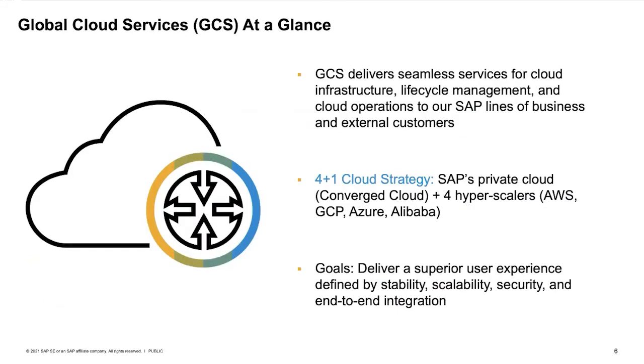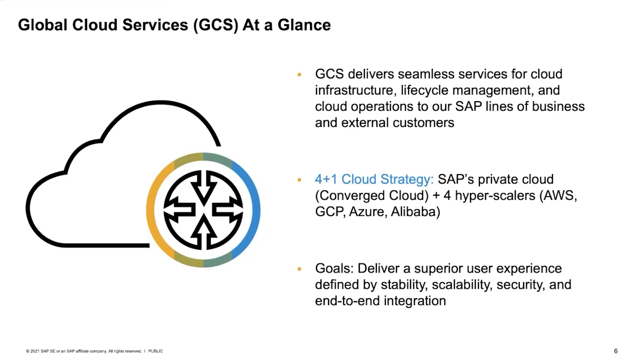Global Cloud Services, the organization I'm a part of, we deliver seamless services for cloud infrastructure, lifecycle management, and cloud ops to all of our lines of business and customers. We're employing a four-plus-one cloud strategy — investing heavily in our private cloud solutions because customers want and need that data security, and also investing into the four primary hyperscalers: AWS, GCP, Azure, and Alibaba. As a truly global company, we have to be dynamic in our ability to meet customers' needs. Our end goal is to deliver a superior user experience defined by stability, scalability, security, and end-to-end integration.